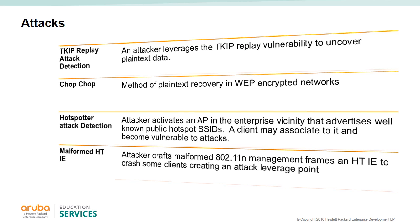The IPS can be set up to detect an entire range of different types of attacks on your network. For example, the TKIP replay attack leverages vulnerabilities in TKIP, and the ChopChop attack allows an attacker to interactively decrypt the last N bytes of plaintext in a WEP-encrypted packet. This is just a small list of many attacks that the IPS can be configured to detect; if you require more information you can easily research them on the web.